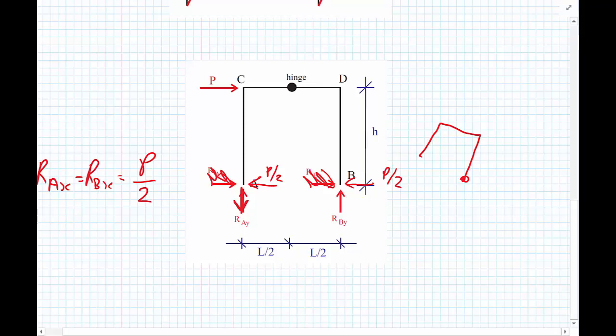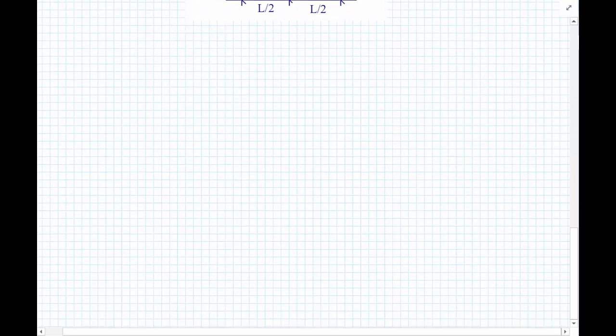So in effect, what we've done is split this structure into two determinate structures. We have a determinate structure AC, and then let's call this central point where the hinge is E, and a second one BDE. So we can analyze these structures independently.